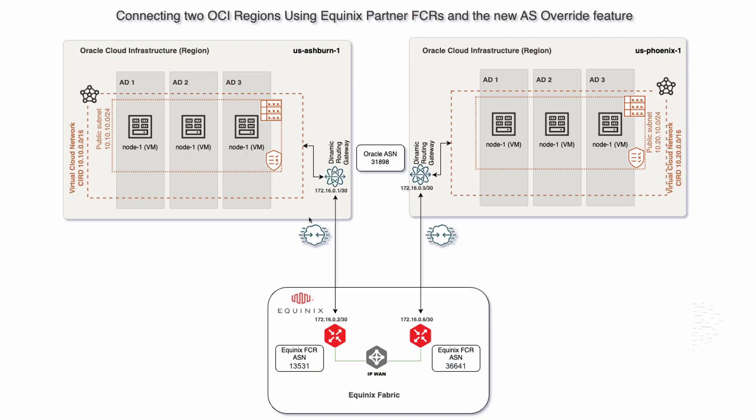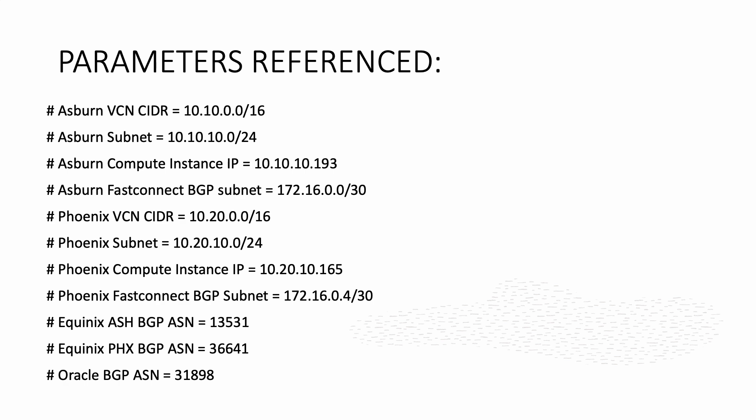Today, I will present how to connect two Oracle Cloud Infrastructure Regions using Equinix Fabric Cloud Routers. This solution can be used as a replacement for the OCA remote peering connection. This video will follow the network diagram shown on the screen, and the primary focus will be creating an Equinix partner FastConnect and how to provision and configure the Equinix side. I have prepared all the required data to configure OCA FastConnect and Equinix infrastructure. Let's start configuring Equinix infrastructure first.